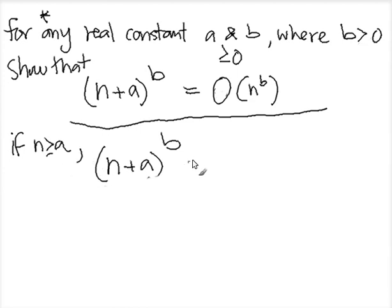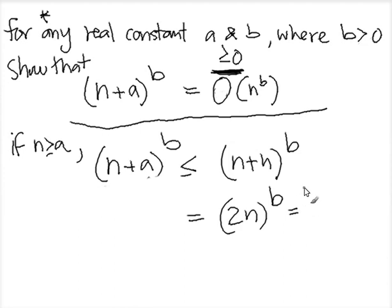So we assume if n is at least as large as a, and a is a positive number, then this is at most n+n, right? Because n is as large as a^b. And this is 2n^b, and that's 2^b times n^b. With this, you can see if b is also a constant, then we have the solution. So if n is large, then we know that if we have a constant c such that if n is larger than a, this would be n₀, and this is c.